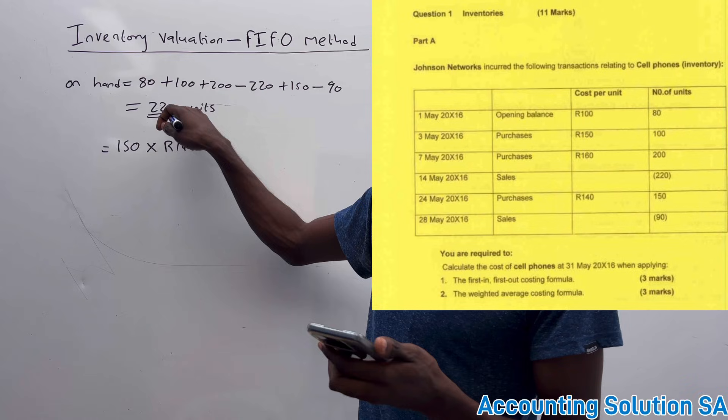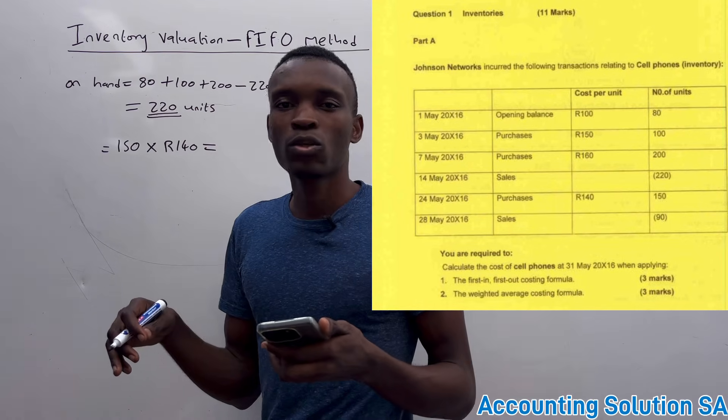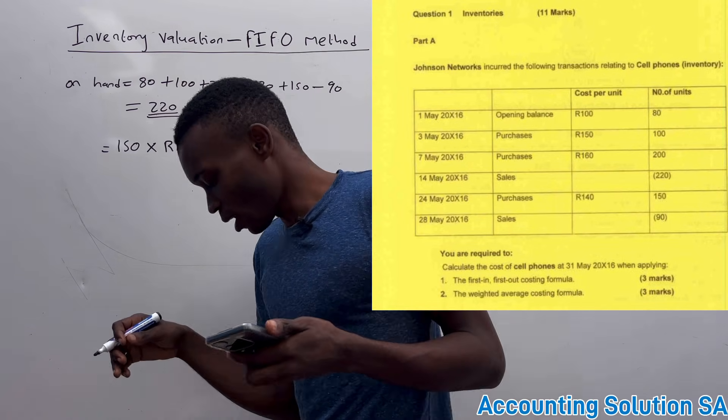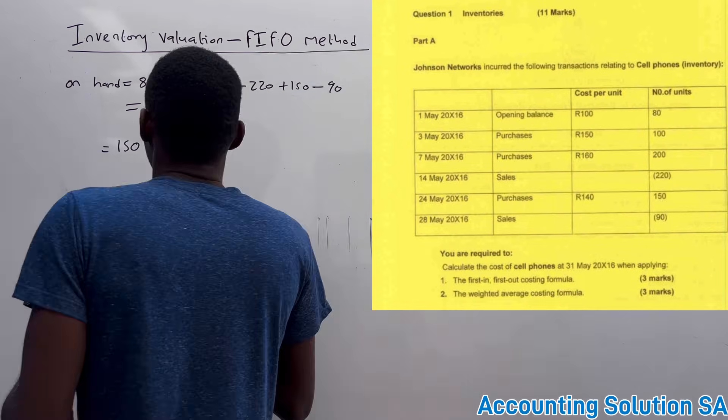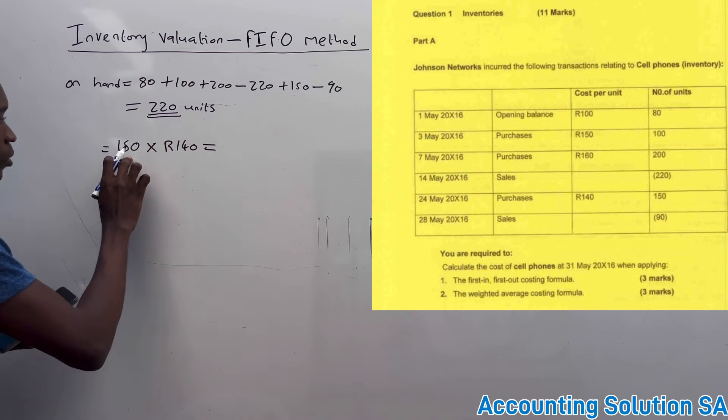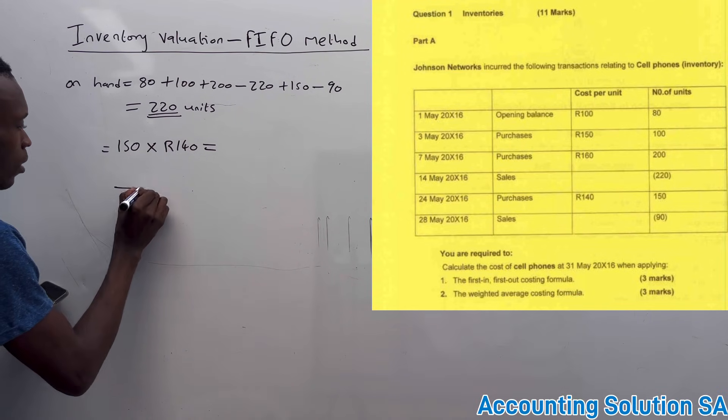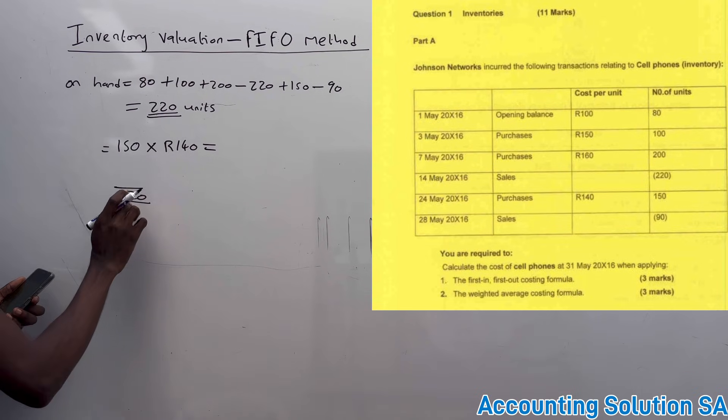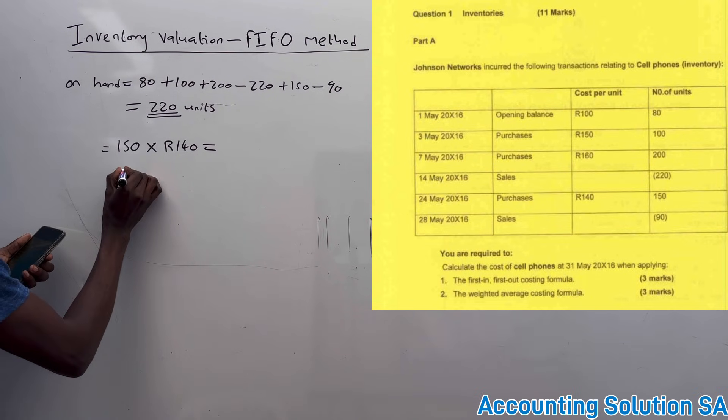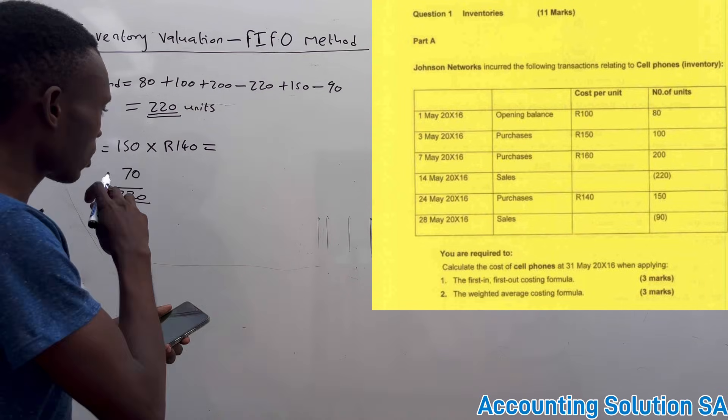How are we going to do this? We have to find how much we're left with so we can get a total of 220. Which means that 220 minus 150 is going to give us 70. So which means this 70 units is left under the batch of 200, which means we're going to take cost per unit under the batch of 200 which is R160.